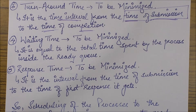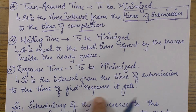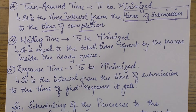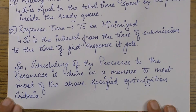Next is response time, which also needs to be minimized — we should be able to get the response of the job at the earliest. It is defined as the interval from the time of submission to the time of the first response. We'll understand this better when we work through various numerical examples.